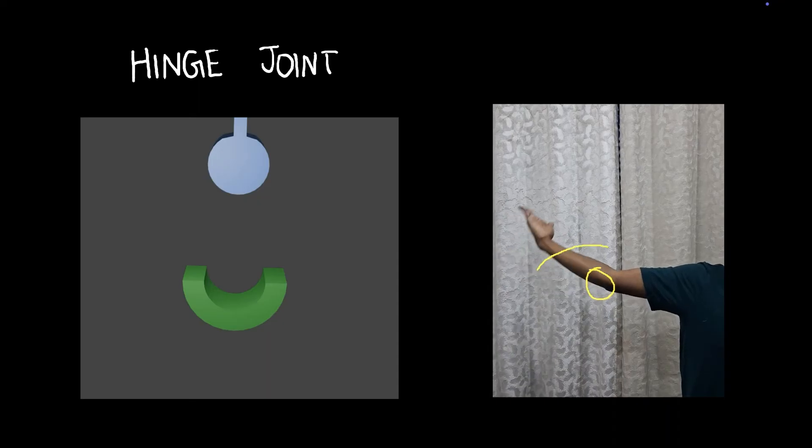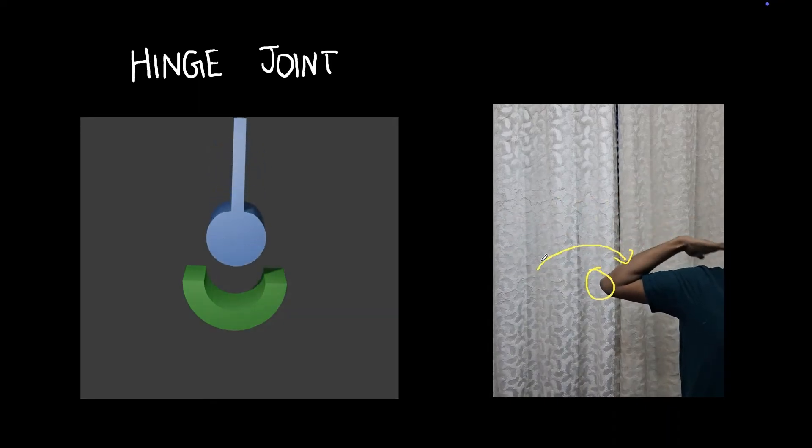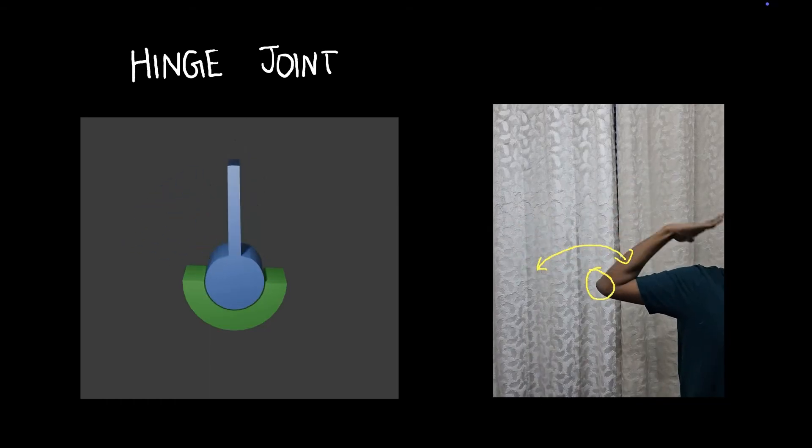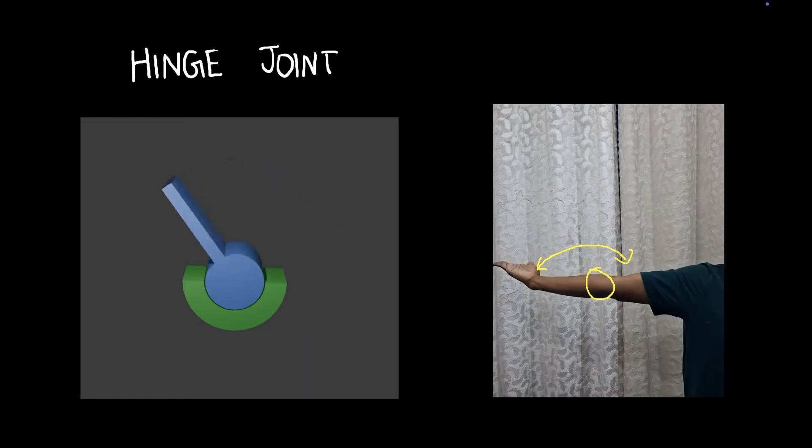This allows movement in this direction and back in this direction, right? Just like the animation. So that was an example of a hinge joint.